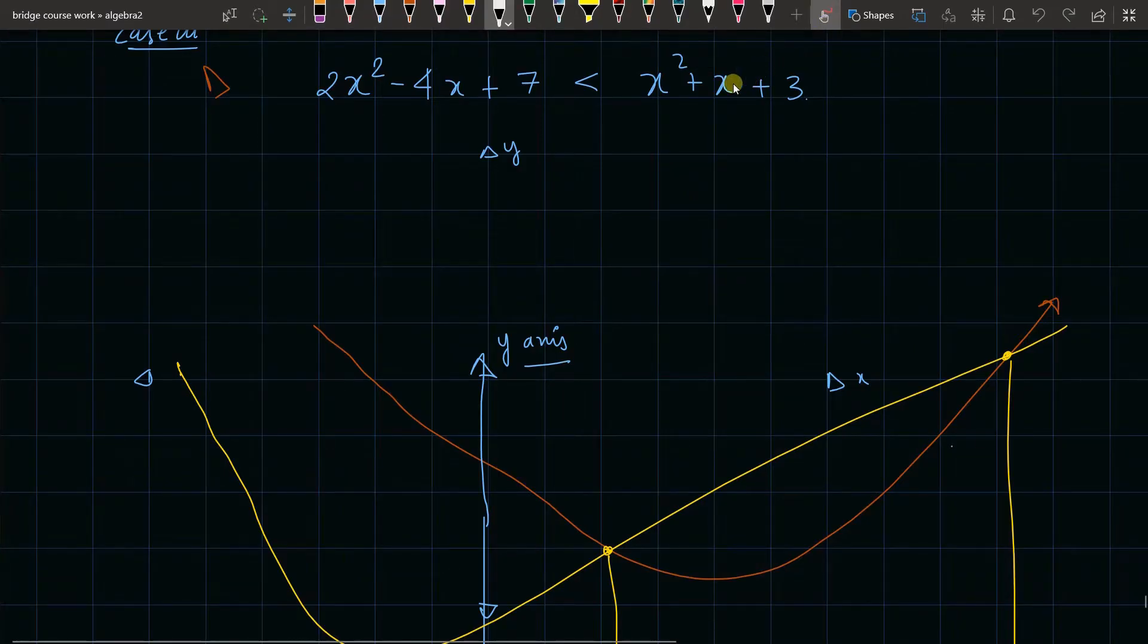Hey, welcome to Mammoth Online. Today we are looking into case 3 of quadratic inequality. There are two quadratics which are having an inequality in between. This can be less than, less than equal to, greater than, greater than equal to—any of the following possibilities are there. I have taken a special scenario where both quadratics have this kind of notation: 2x² - 4x + 7 and x² + x + 3. These are the two quadratics we have taken.